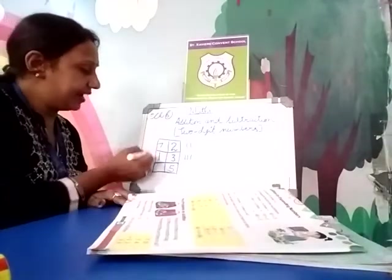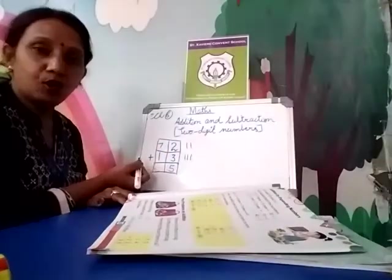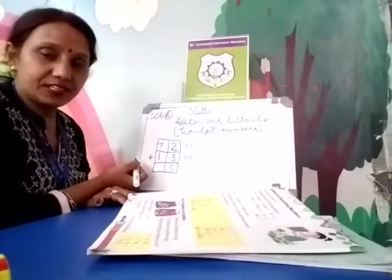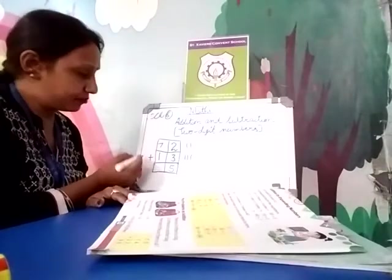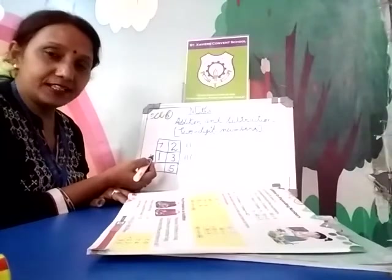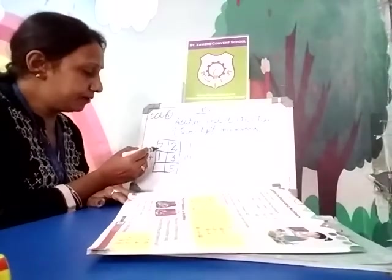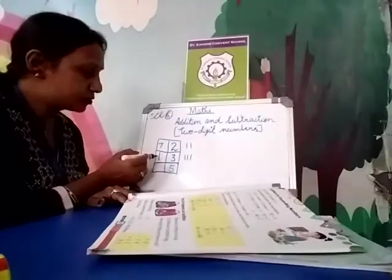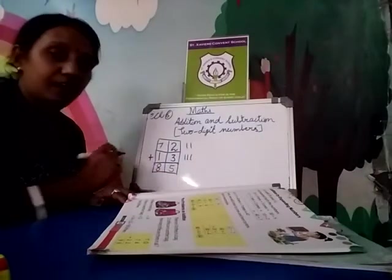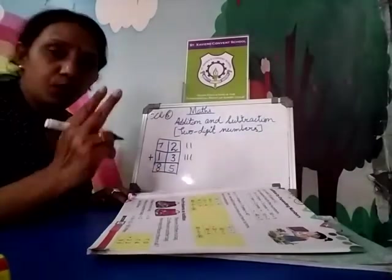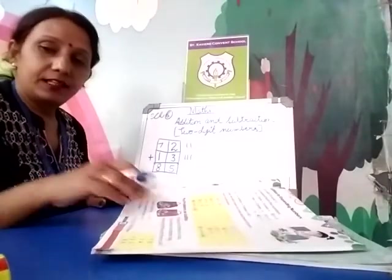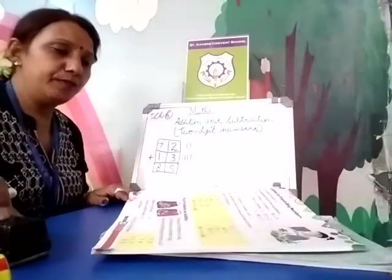Now add 7 and 1. After 7, what comes? When we add 1, the next number of 7 is 8. So 7 plus 1 equals 8. This is 2-digit addition. Alright? This way you can do many examples.